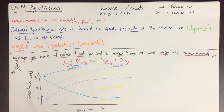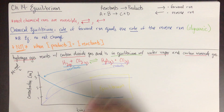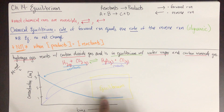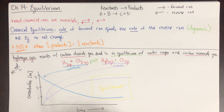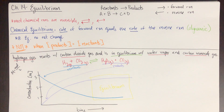So this is what chemical equilibrium is: when the rate of the forward reaction equals the rate of the reverse reaction. It is not when the concentrations are the same, and we'll look at this more later.